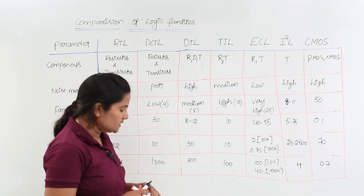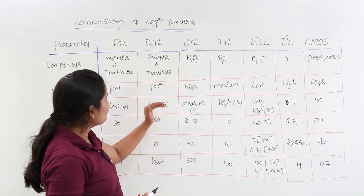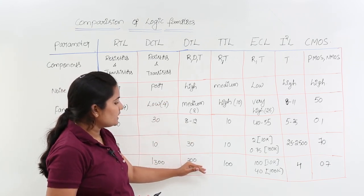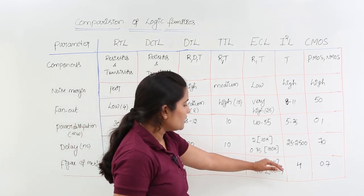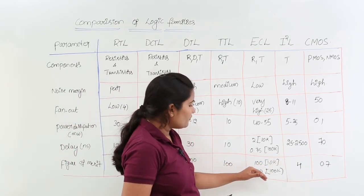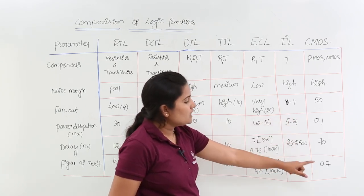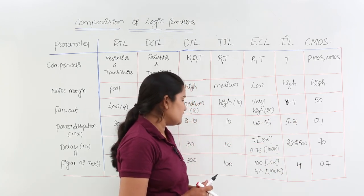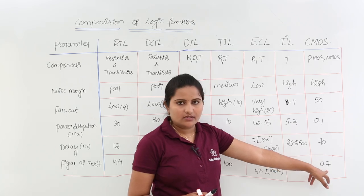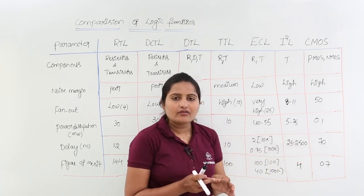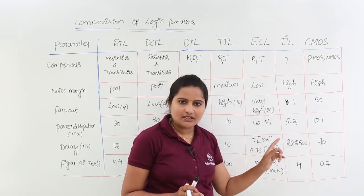The figure of merit values are: RTL 144, DCTL 1300, DTL 300, TTL 100, ECL 10K is 100, ECL 100K is 40, I²L is 4, and CMOS is 0.7. A lower figure of merit is better, and CMOS has the lowest figure of merit among all logic families.